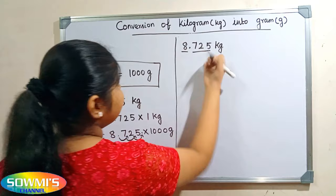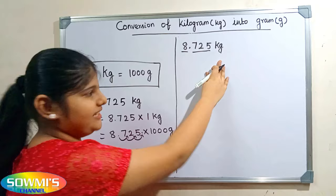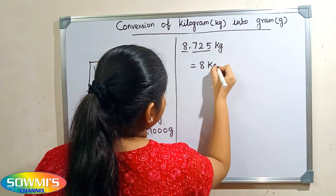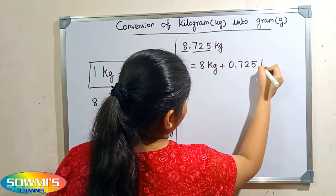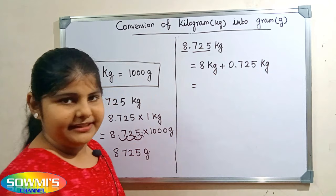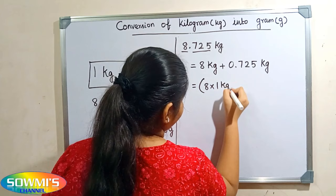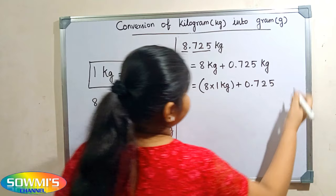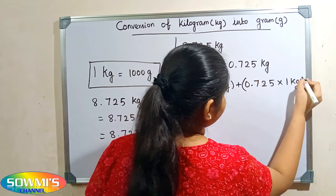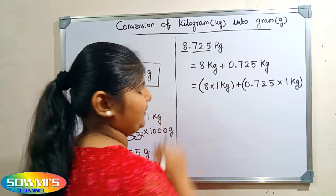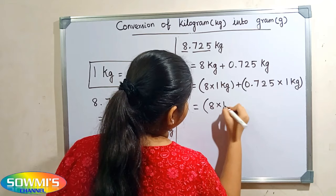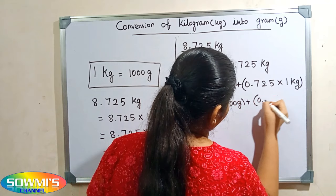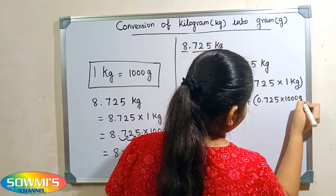Next we will see another way to solve this problem. First we separate the whole number part and the decimal part. So 8.725 kilogram can be written as 8 kilogram plus 0.725 kilogram. Here 8 kilogram can be written as 8 multiplied by one kilogram. Substituting one thousand grams: 8 multiplied by one thousand grams, plus 0.725 multiplied by one thousand grams.